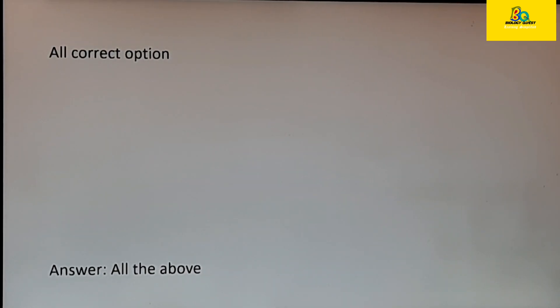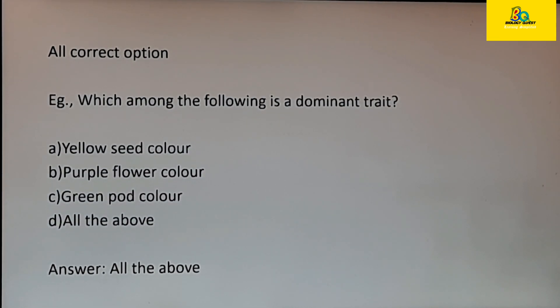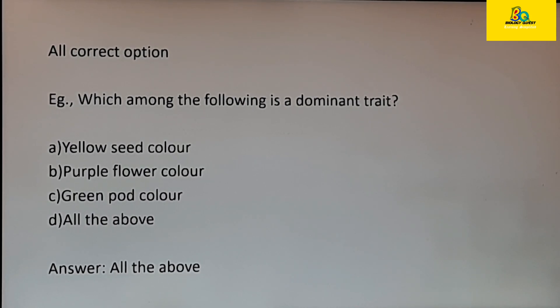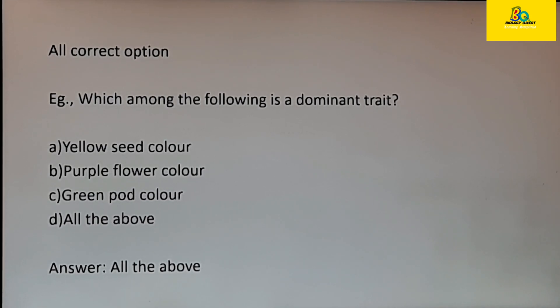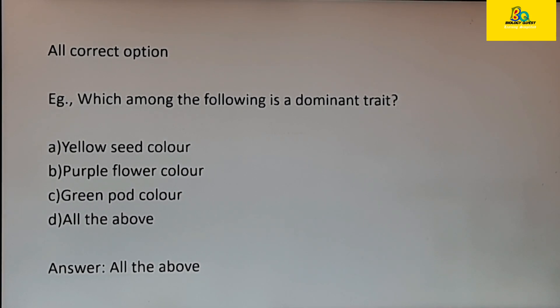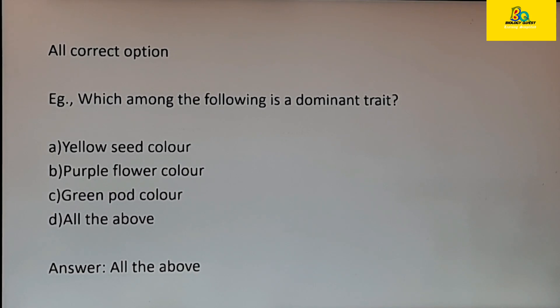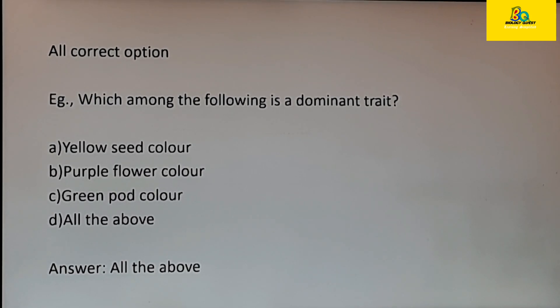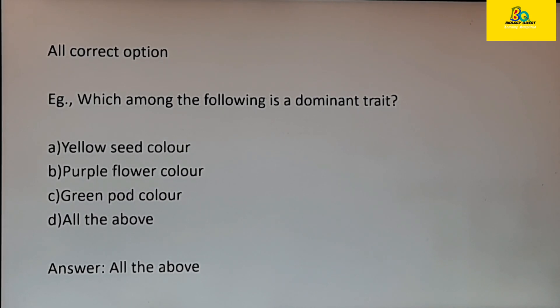If suppose two options are correct but you are doubtful about the third option, as you can see here, if the fourth option is all the above, then that means all the above option is the correct answer. So if you look at this question, which among the following is a dominant trait, you might not have any doubt regarding the first two options: yellow seed color and purple flower color. But green pod color might be confusing to you. In such case, if there is a fourth option saying all the above, then confirm that that is the correct option.